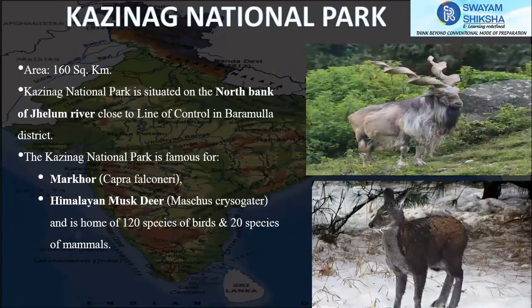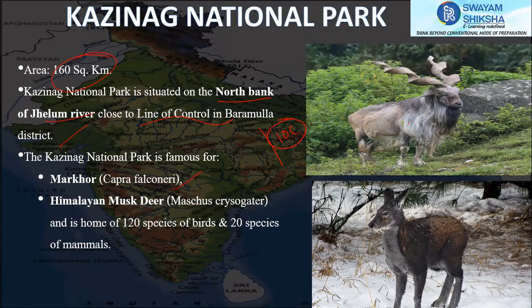Kajinag National Park covers 160 square kilometers and is situated on the north bank of the Jhelum River, close to the Line of Control in Baramulla district. It is famous for the Markhor, a unique and rare species, as well as the Himalayan musk deer. The park is also a home for 120 species of birds and 20 species of mammals.